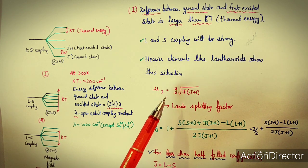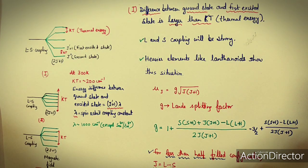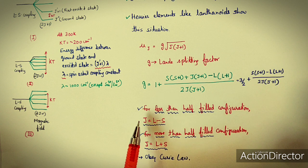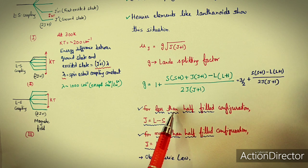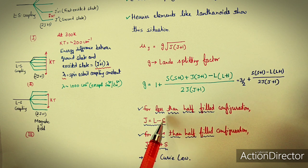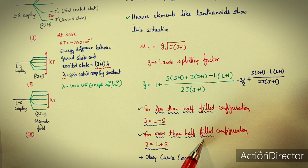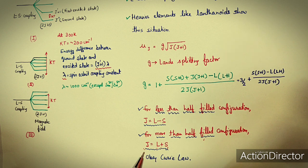For lanthanoids, for a configuration half-filled or less than half-filled, J = L − S; for more than half-filled, J = L + S. Lanthanoids obey the Curie law. For cases where the difference between ground state and first excited state is larger than KT, they obey Curie law.